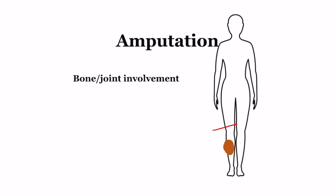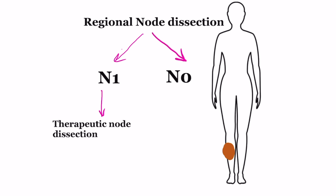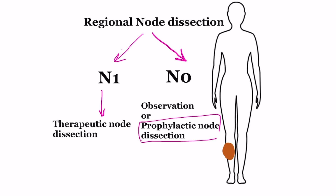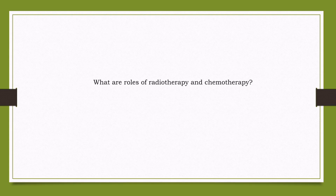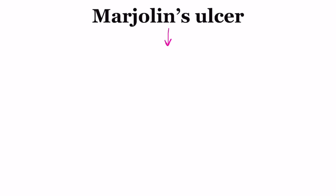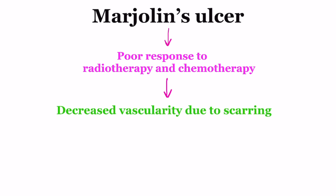Amputation is indicated when deep invasion makes local excision impossible, when there is bone or joint involvement, or when excision would severely impair function. Regional node dissection is done in cases of involved nodes, or sometimes prophylactically when chances of nodal metastasis are high — such as when there is growth of tumor beyond the scar, or when the patient may not follow up regularly. Marjolin's ulcer is relatively less responsive to radiotherapy and chemotherapy due to decreased vascularity and extensive fibrosis in surrounding tissue, but these may have a role in a palliative setting.